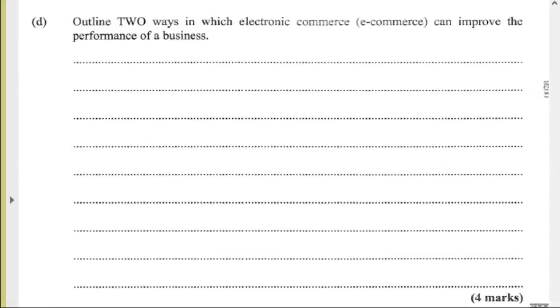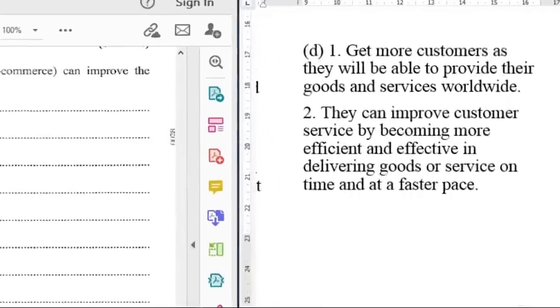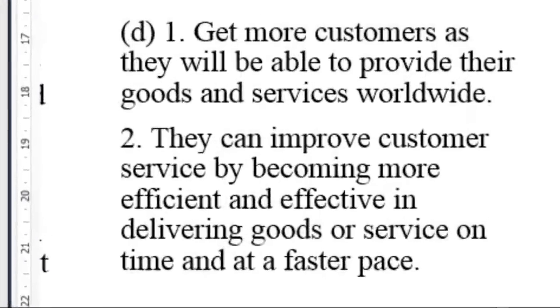Let's look at D. Outline two ways in which electronic commerce, that is e-commerce, can improve the performance of a business. Number one, get more customers as they will be able to provide their goods and services worldwide. Another way is that they can improve customer service by becoming more efficient and effective in delivering goods or services on time and at a faster pace.